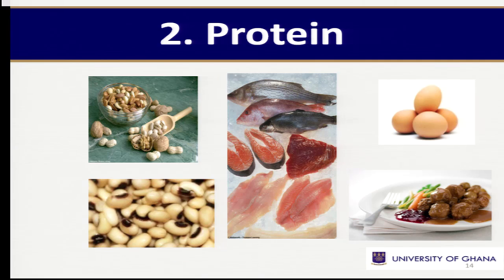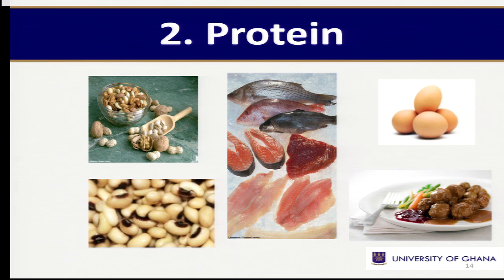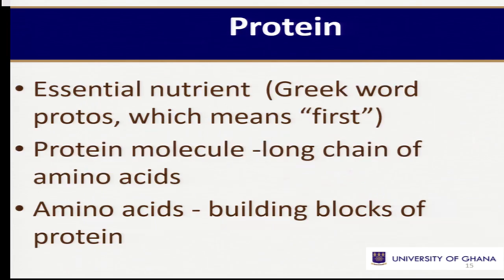Proteins — our next macronutrient. And where do we get proteins? We get proteins from both animal sources as well as plant sources. That is why you see on the screen the pictures from both plants — that is legumes, nuts and beans — and then also from animal source: fish, meat, eggs, and their products are wonderful sources of protein.